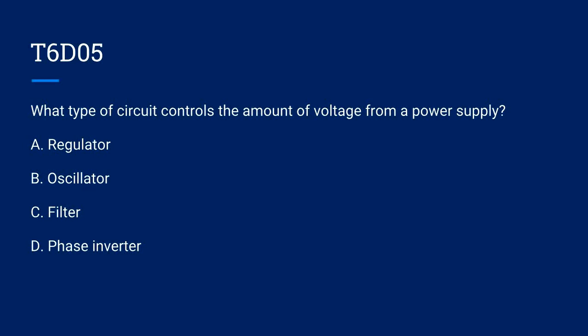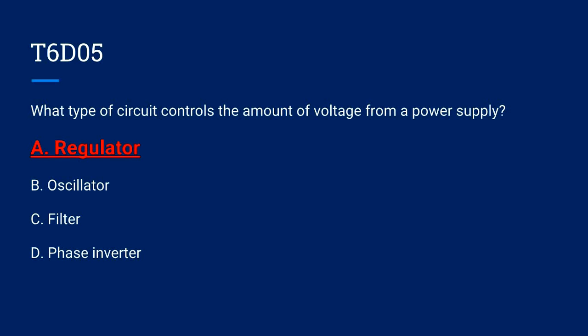T6D05. What type of circuit controls the amount of voltage from a power supply? A. Regulator. B. Oscillator. C. Filter. Or D. Phase inverter. The correct answer is A. A regulator.